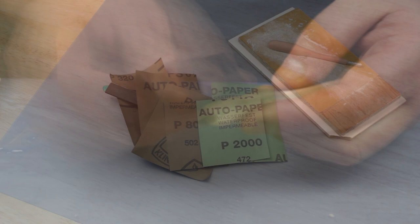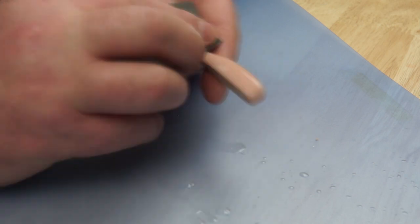Then with a bit of water, I worked through the range of wet and dry sandpapers that I had in my box. So for a final finish, I used a piece of cotton terry towelling to give it a polish.